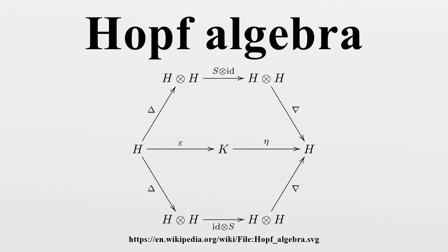One can replace the underlying field K with a commutative ring R in the above definition. The definition of Hopf algebra is self-dual, so if one can define a dual of H, then it is automatically a Hopf algebra.